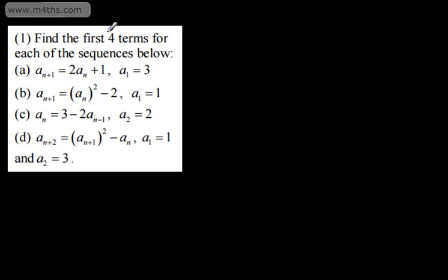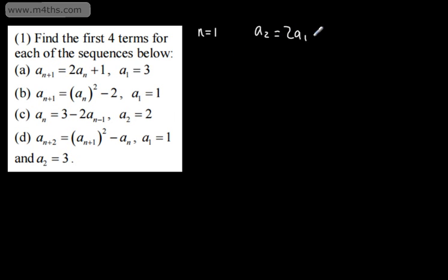In question 1, we're asked to find the first four terms for each sequence below. For part a, we have a sub n plus 1 equal to 2a sub n plus 1, with a1 equal to 3. When n is equal to 1, a2 is equal to 2a1 plus 1, which is 2 lots of 3, which is 6, plus 1, giving me 7.